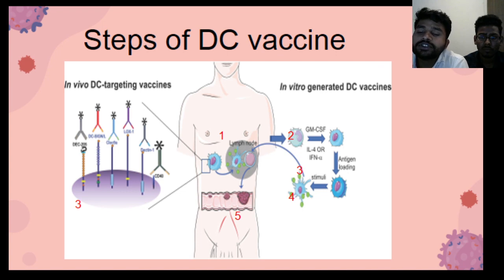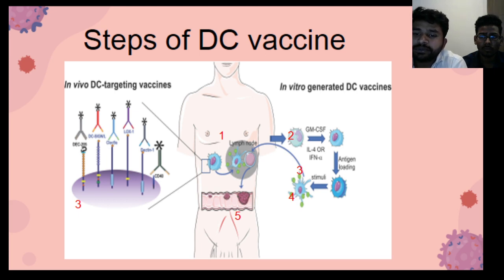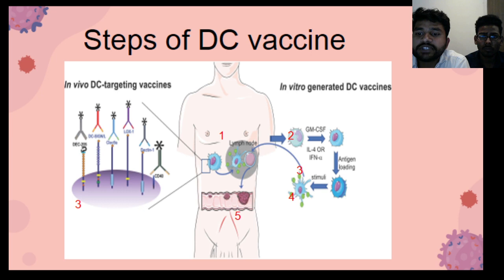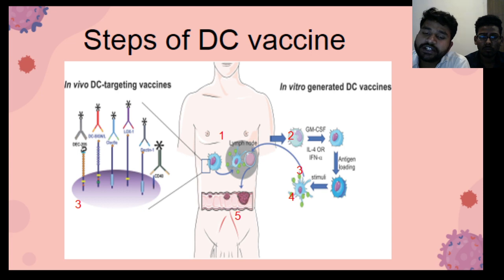Now we will see how we make a dendritic cell vaccine. There are five steps. First, we take fresh blood from the human body. Then we extract monocytes in the second step. Then we cultivate those monocytes and add GM-CSF. After that we add antigen, the cells mature, and they are then returned to the patient.